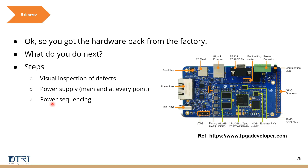Next is power sequencing. When you turn on the hardware, there is a defined sequence for turning on and off the devices. In a complex embedded system, all components do not turn on or off at the same time — there is an order for which turns on first, which turns on next, and the reverse order for turning off. This is called power sequencing, and you would have defined this flow during architecture design. You should ensure that this is actually happening as designed.